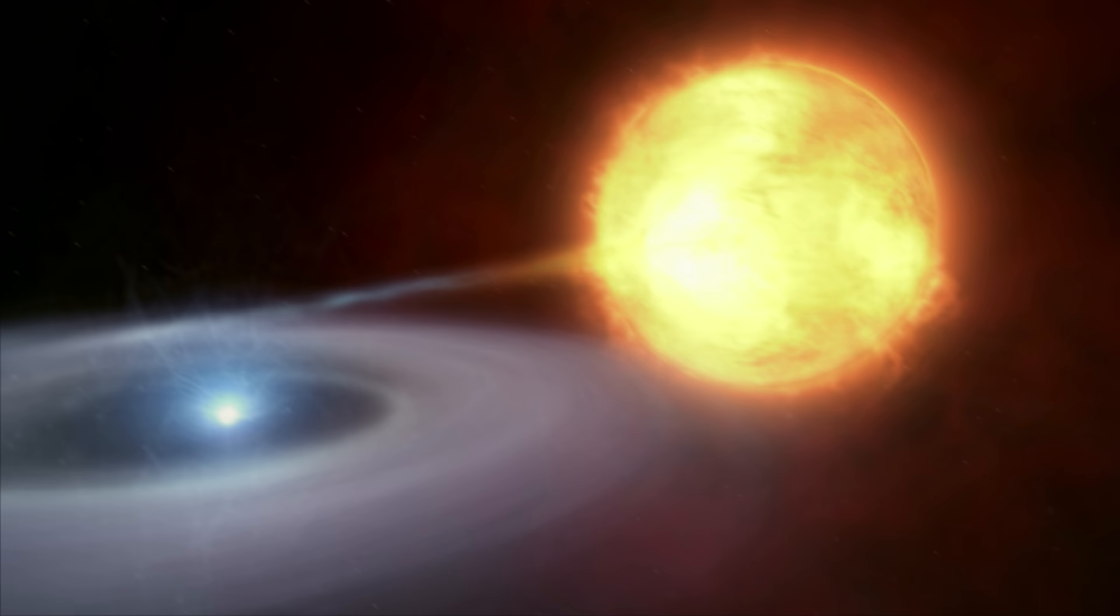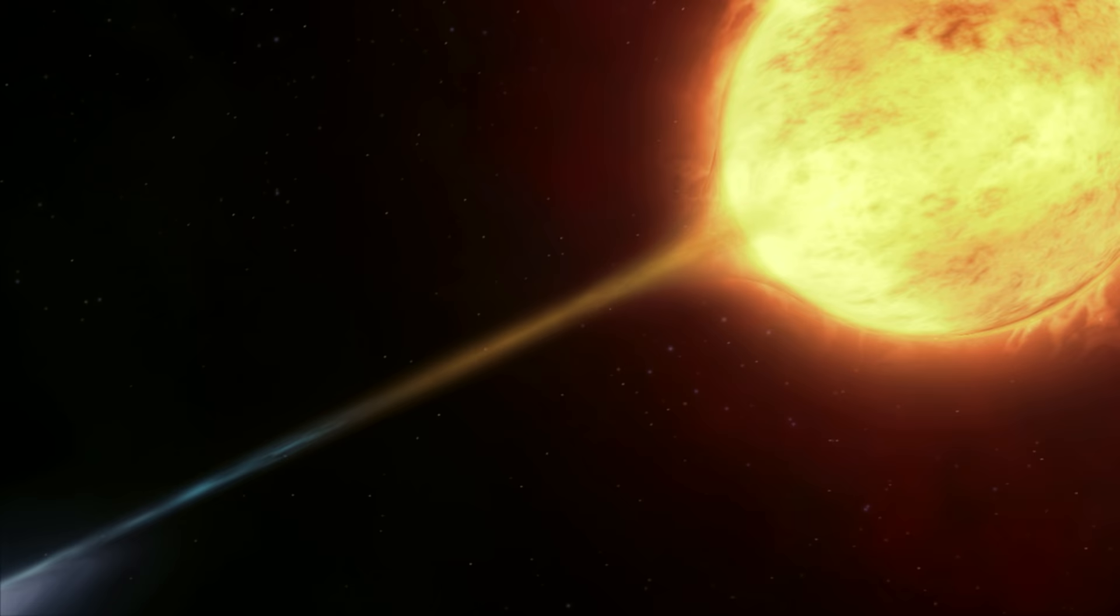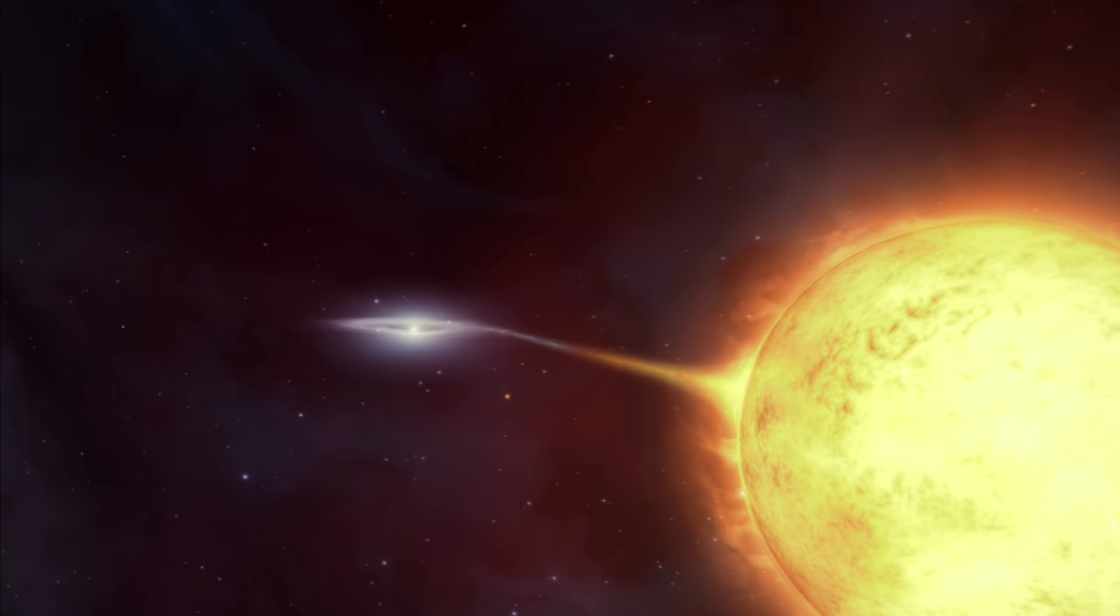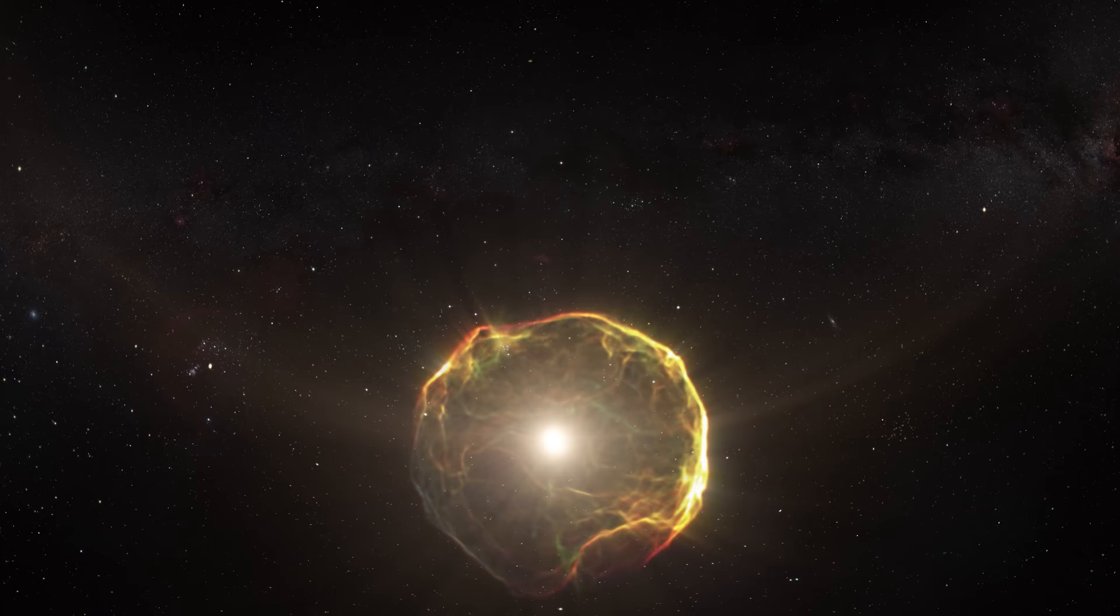They did this by searching deep space for a particular type of exploding star. Called a type 1a supernova, it often begins with two stars in a close orbit, one of which draws gas from its companion. When it gains enough mass, it undergoes a runaway nuclear reaction and explodes. Because type 1a supernovae are all thought to blow up in the same way, they have the same intrinsic brightness. That makes them ideal for measuring cosmic distances.